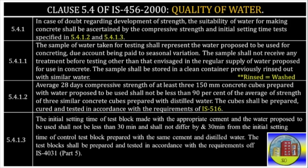5.4.1.3: The initial setting time of test block made with appropriate cement and the water proposed to be used shall not be less than 30 minutes, and shall not differ by more than 30 minutes from the initial setting time of a control test block prepared with the same cement and distilled water. The test block shall be prepared and tested in accordance with the requirements of IS 4031 Part 5.